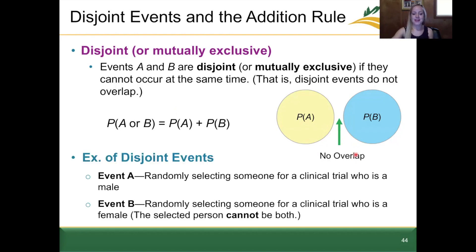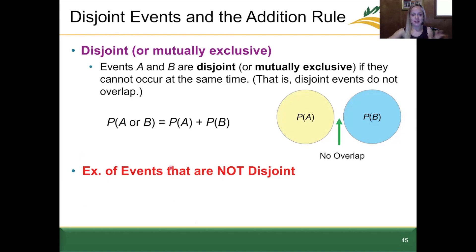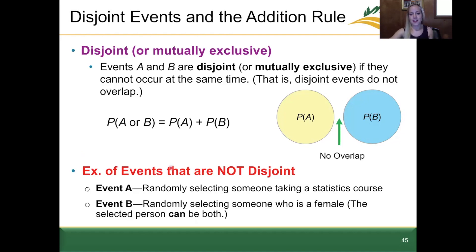An example of disjoint or mutually exclusive events: event A is randomly selecting someone for a clinical trial who is male; event B is selecting someone who is female. When talking in terms of assigned genders, someone can't satisfy both events at the same time. An example of events that are NOT mutually exclusive: event A is randomly selecting someone taking a statistics course; event B is randomly selecting someone who is female. We can certainly have people in the class who are taking statistics and are also female.